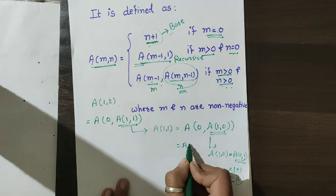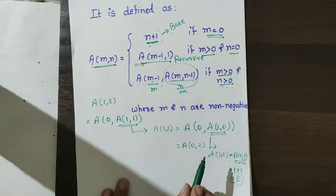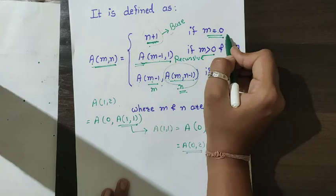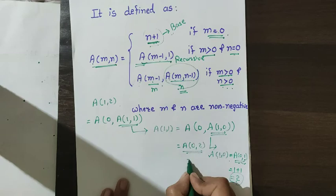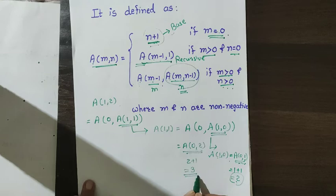Placing 2 back into a(0, a(1,0)) gives a(0, 2). Applying the base case again: n plus 1 is 2 plus 1, so I get the answer 3.